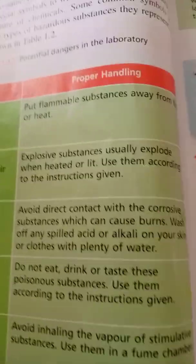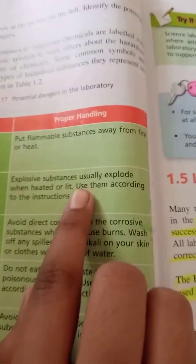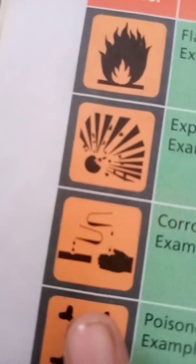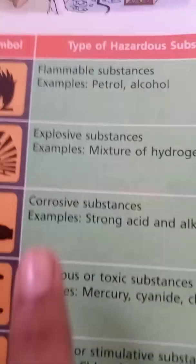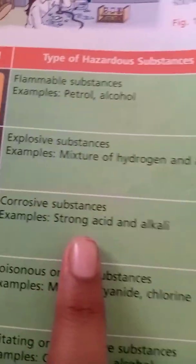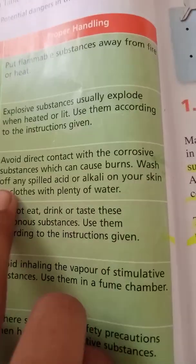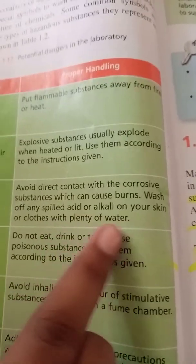Now comes the corrosive substances. Examples are strong acids and alkalis. Avoid direct contact — corrosive substances can cause burns. Wash off any spill of acid or alkali on your skin or clothes with plenty of water. Corrosive substances are substances which can cause burns on your skin.